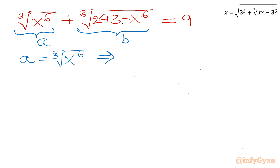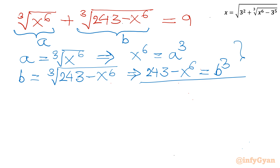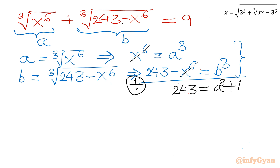From A = ∛(x⁶), we get x⁶ = A³. And B = ∛(243 − x⁶), so 243 − x⁶ = B³. Adding these two equations, x⁶ and −x⁶ cancel out, giving 243 = A³ + B³. The original equation also gives us A + B = 9.